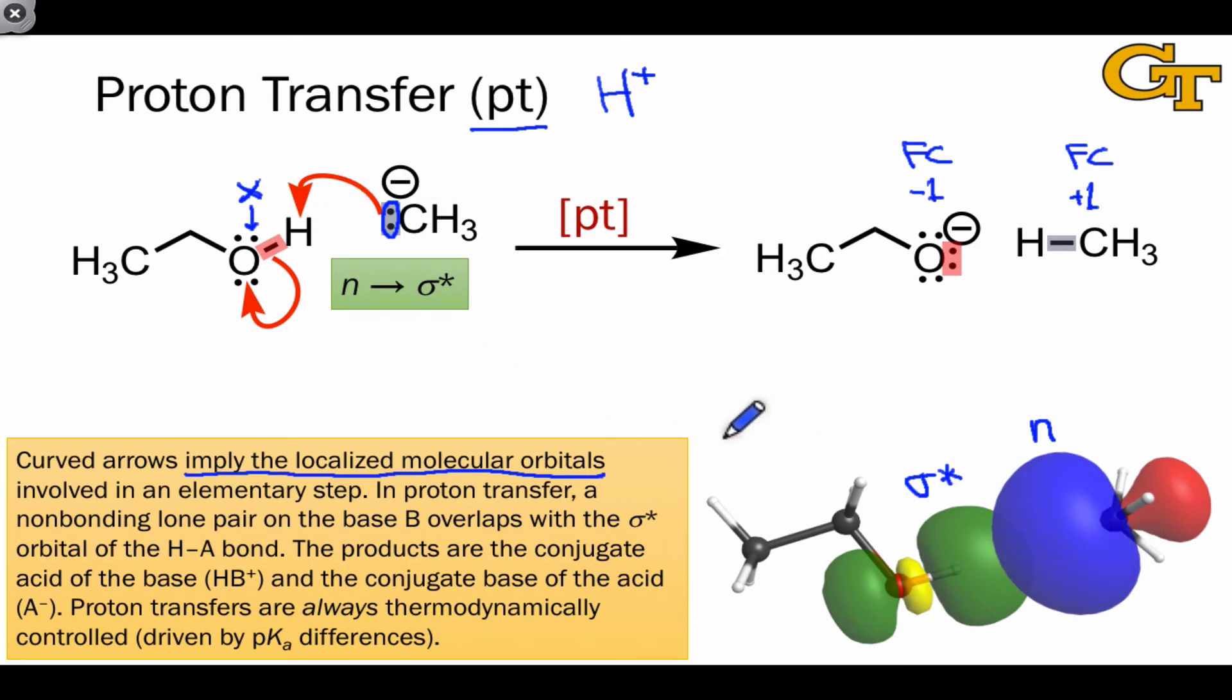From the curved arrows alone, we can draw a picture of the orbital overlap involved, which gives us insight. It tells us, for example, that for overlap to be most efficient, the axis of symmetry of the sigma anti-bonding orbital and the axis of symmetry of the non-bonding lone pair orbital must be coincident. In other words, the two orbitals must be coaxial. That's useful spatial information.